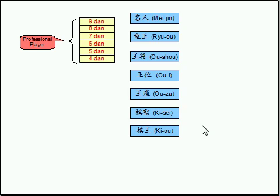They are Meijin, Grand Champion. Ryuou, Dragon King. Oshou, King General. Ooi, King's Rank, which means like Throne. Oza, King's Seat, so it means Throne too. Kisei, Shogi Saint. And Kiyou, Shogi King.